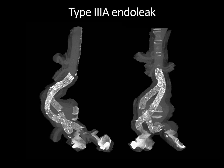Often with type 3 endoleaks, the reformatted images better show the graft disconnect. These 3D MIP reconstructions show the disconnected limb on the sagittal image and on the coronal image very nicely. Here's the normal contralateral limb, and this is how it should normally be connected.